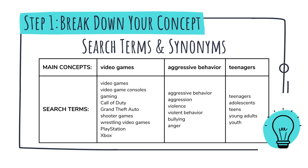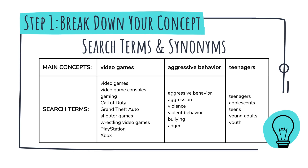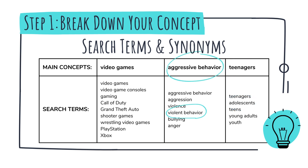This is where the thesaurus is your friend. You need these alternate words because sometimes the author of an article may use a different word than you to describe the same concept. If you don't use the same word as the author, you may miss out on finding a really useful article. For example, you may use the word 'teenagers' and an author may use 'adolescents.' Or instead of saying 'aggressive behavior,' an author may say 'violent behavior.'